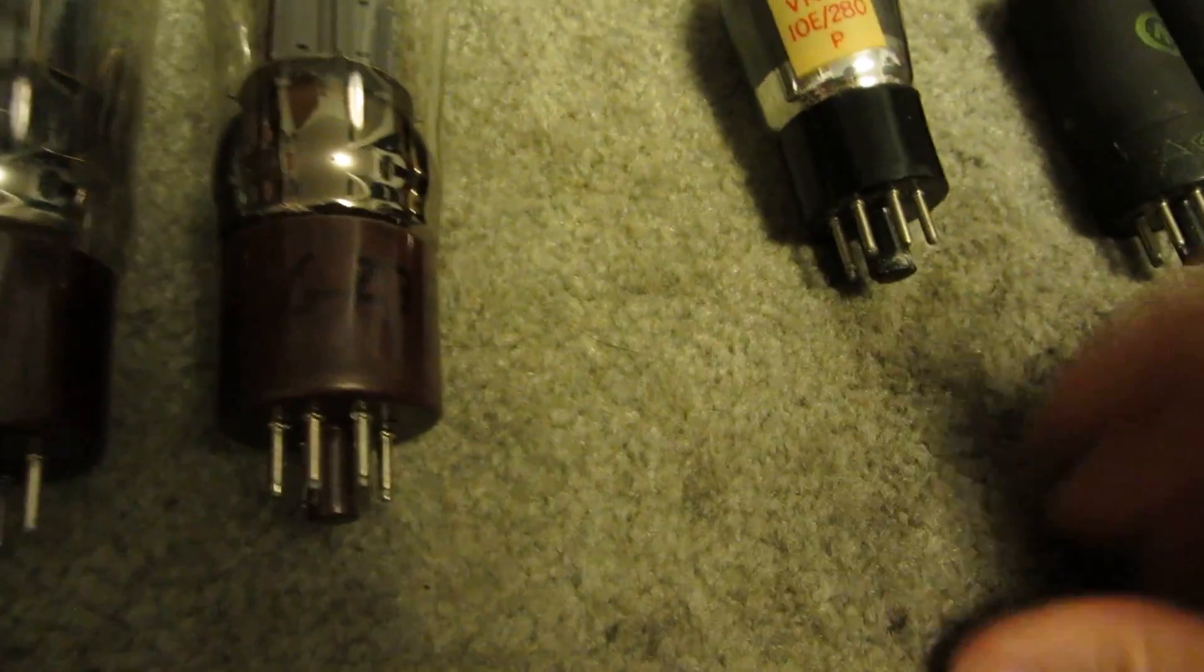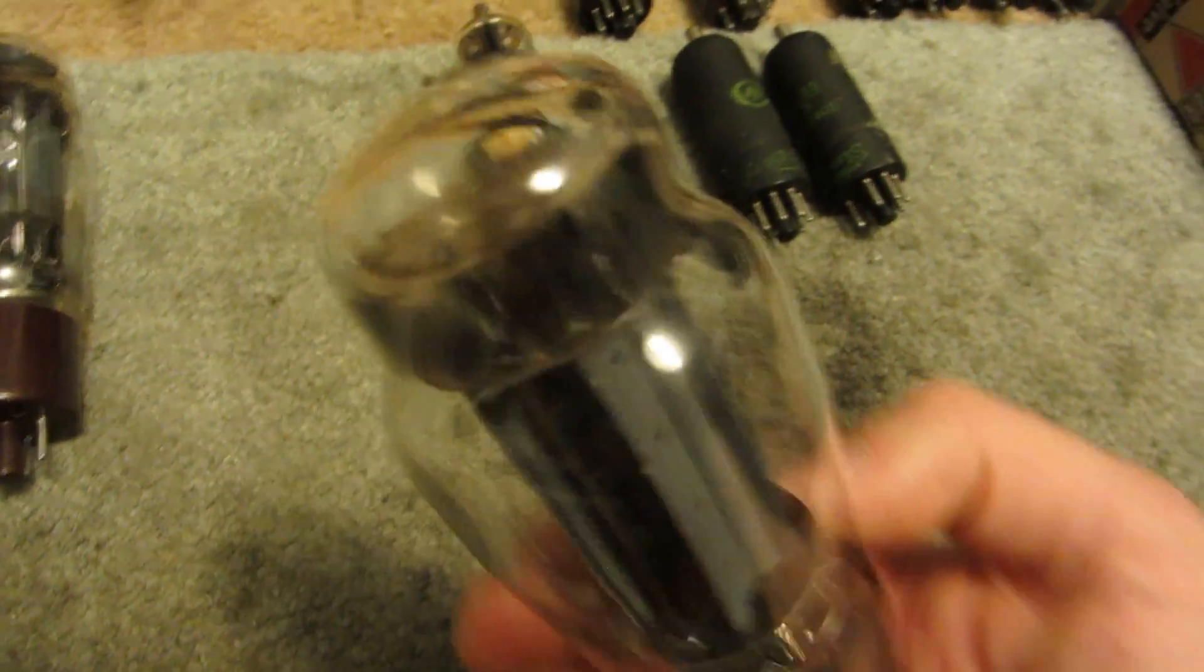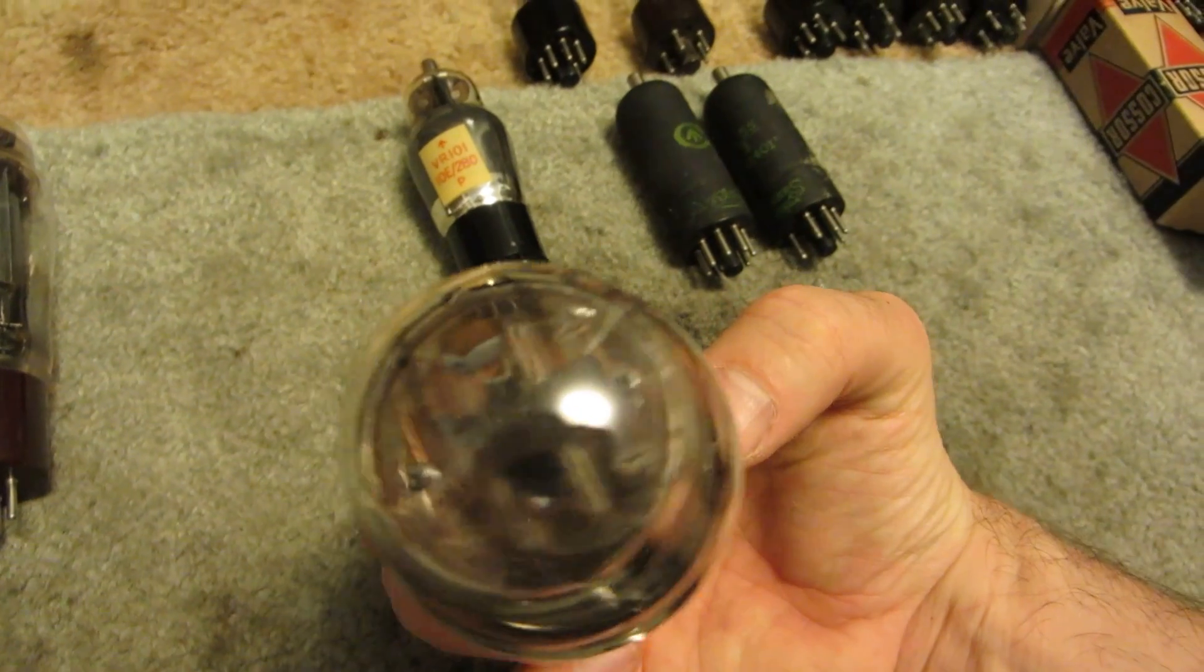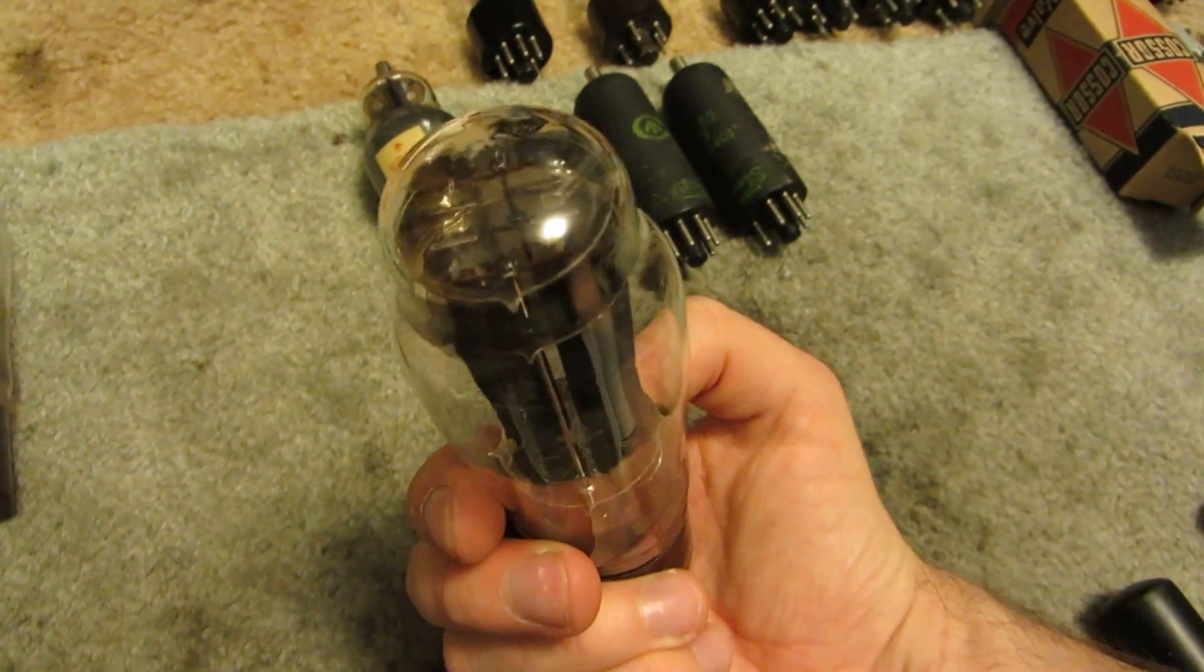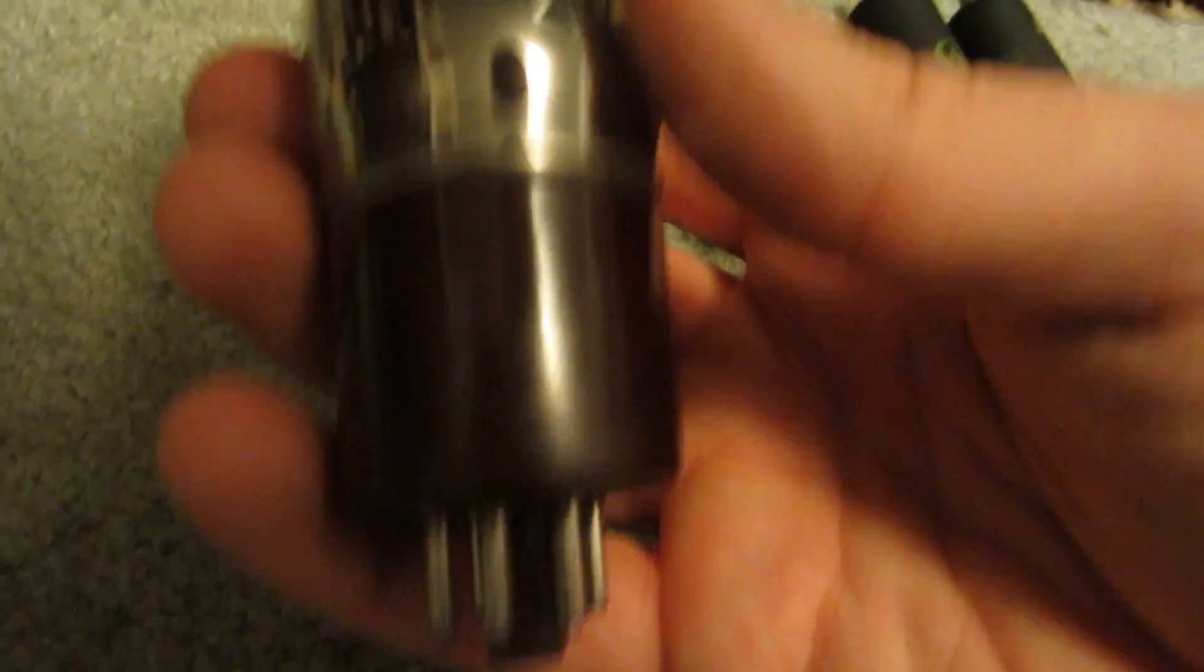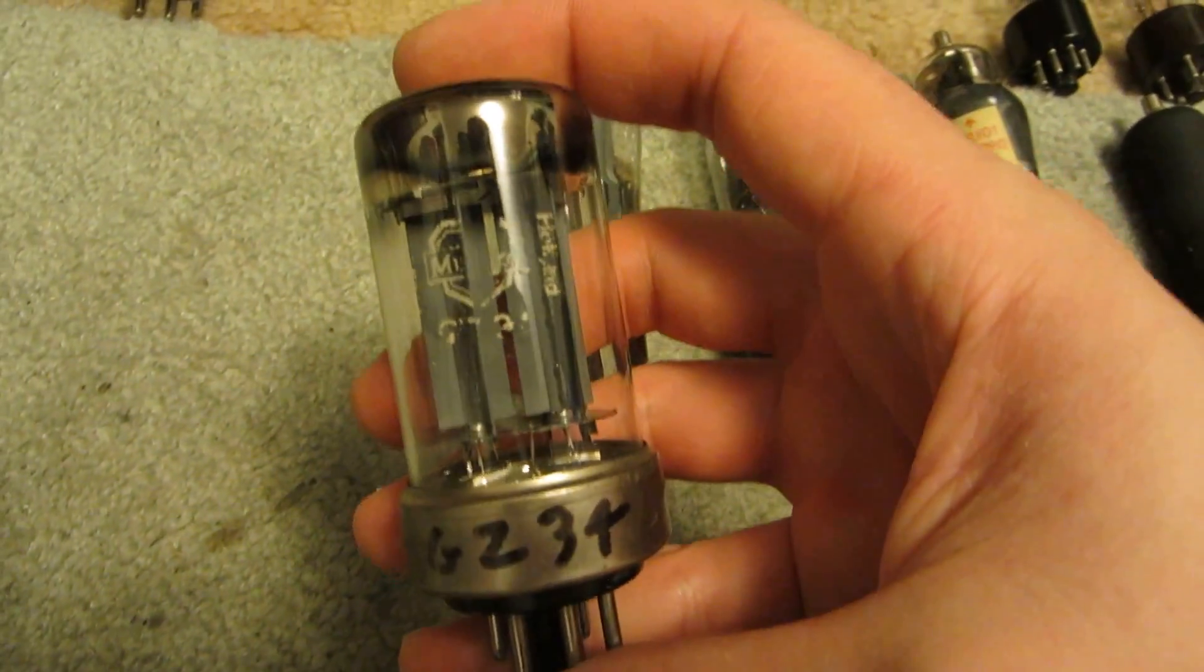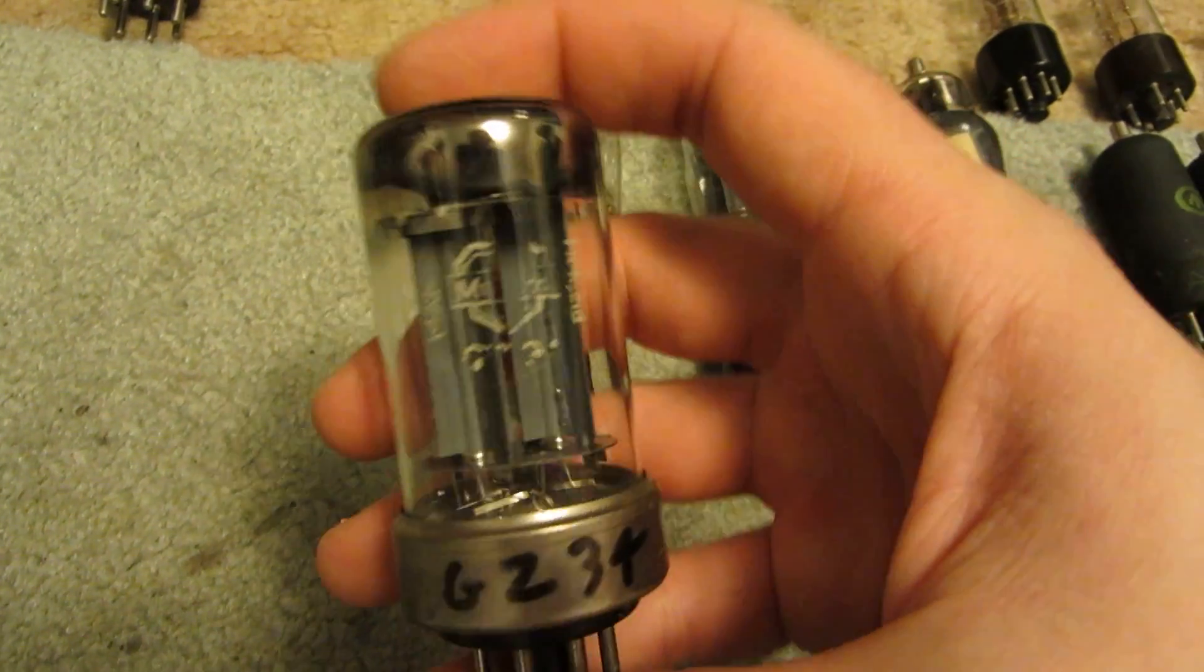A GZ-37, it's a very tall tube. And a GZ-33, they look very similar. A GZ-34.